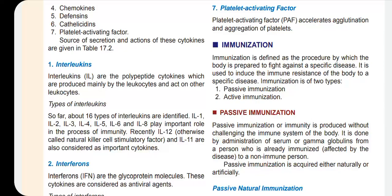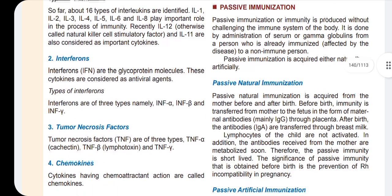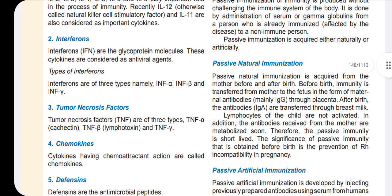Passive immunization is where the body is not actively involved. This immunity occurs without challenging the human body. Passive immunization adds antigens or foreign products. There are two types: passive natural immunization and passive artificial immunization. Passive natural immunization is received from the mother before and after birth.